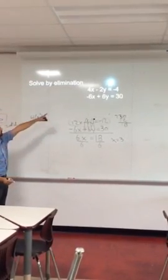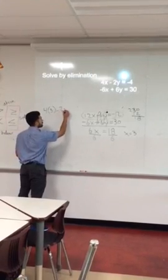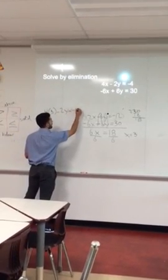So this three is the value of my x. So instead of the x I have the three. Minus two y equals negative four.